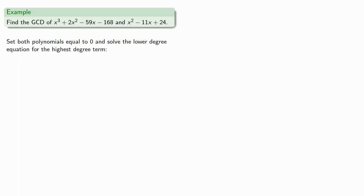For example, let's find the GCD of these two polynomials. So first we'll set both polynomials equal to zero and solve the lower-degree equation for the highest-degree term. So we'll solve the quadratic for the x-squared term. Now we can substitute for x-squared 11x minus 24.